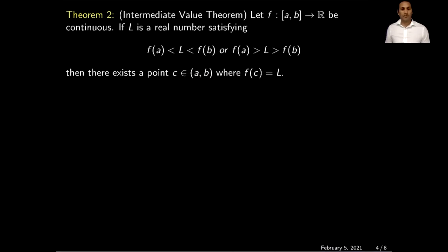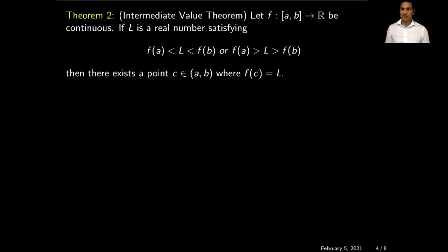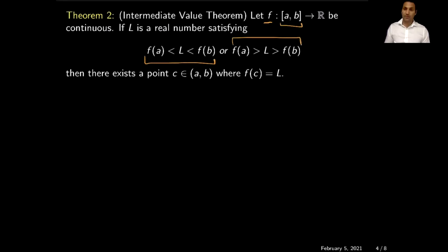Next we will prove the main result of our video tutorial, which is the Intermediate Value Theorem. The statement says: if f is a function defined from a closed interval [a, b] to the reals satisfying one of the given conditions, then there exists an element c in the open interval (a, b) such that f(c) equals the real number l.